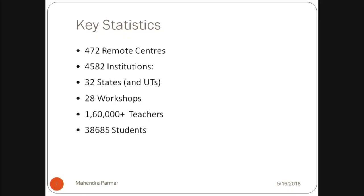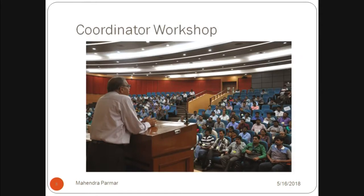Key statistics as of 31st March 2018: 472 remote centres, reaching 4,582 institutions across 32 states. 28 workshops were conducted by IIT Bombay, with 1,60,000-plus teachers trained. Apart from teachers' training, we also conducted programs for students, with 38,685 students being trained.